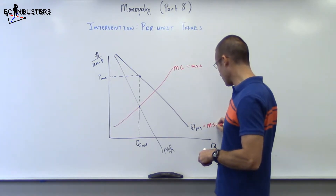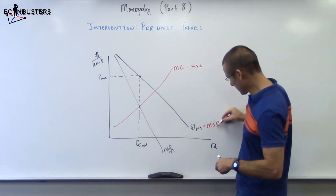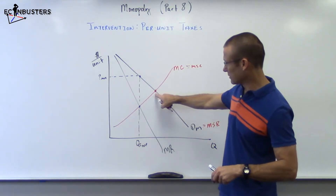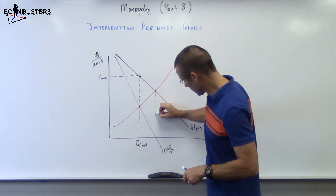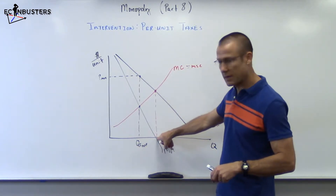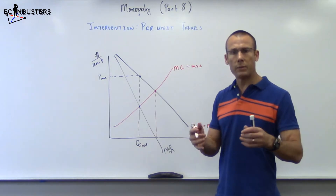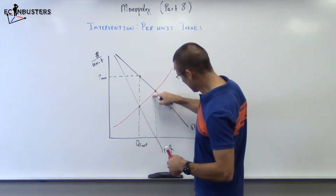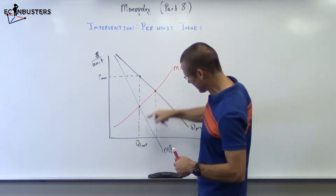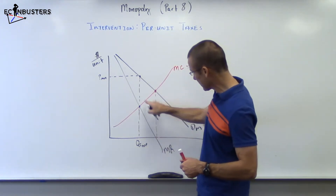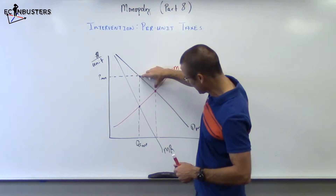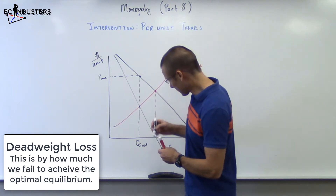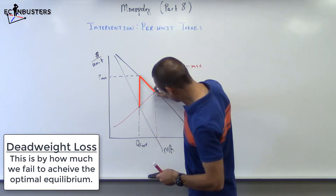The demand curve is the marginal social benefit curve. Where MSB and MSC intersect, we want to produce all the way to right there. MSC and MSB intersect right there — we want to produce all the way to there, but we're not producing there. What would be our dead weight loss? We've got our MSB and our MSC, but we're only producing to Q profit max, not to Q opt. So for all of these goods where MSB is greater than MSC, this would be our dead weight loss.